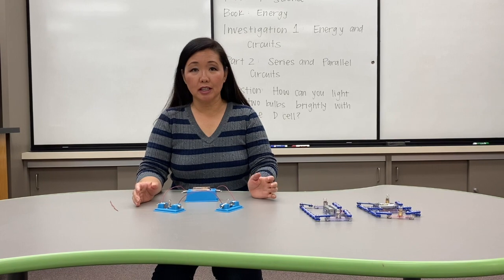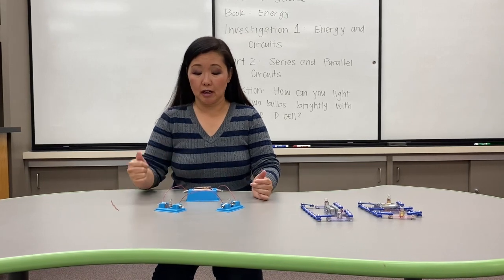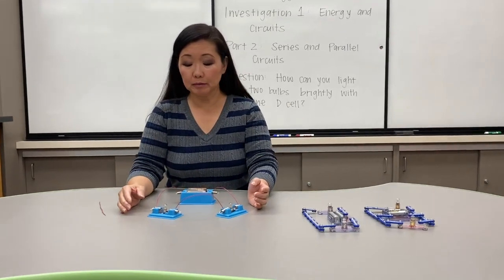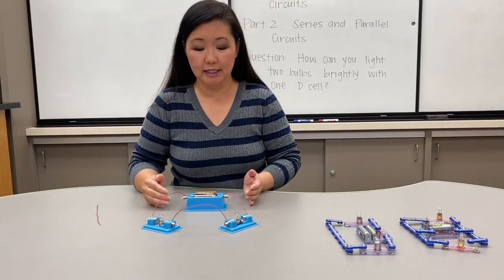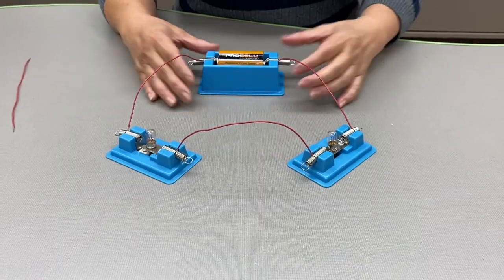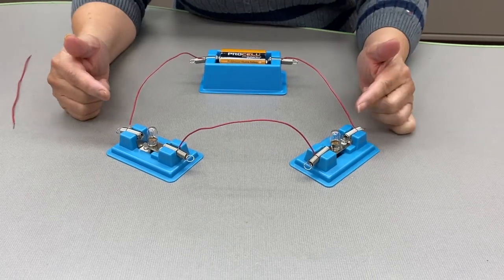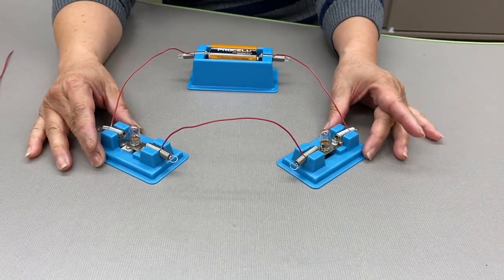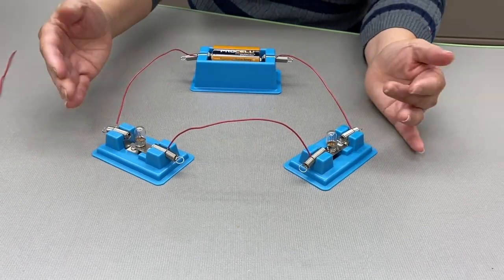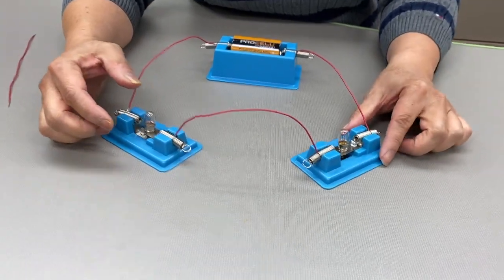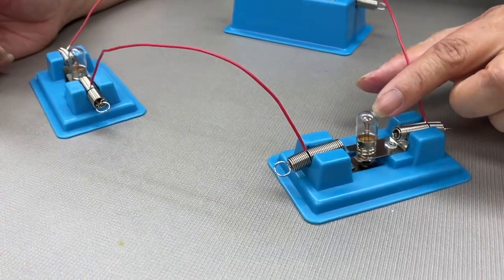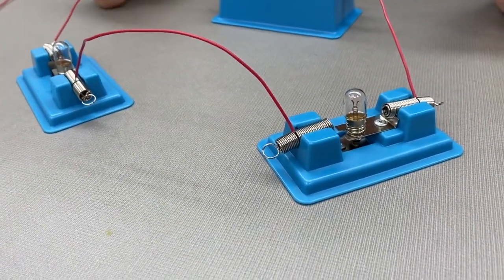So last time we started with a series circuit example and here we have two light bulbs connected to one D cell. And as you can see, the light bulbs are barely even lit. You can't even detect anything unless you look super closely and you can see a little bit of orange on the top of the light bulb.